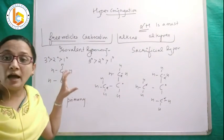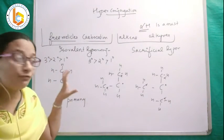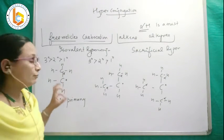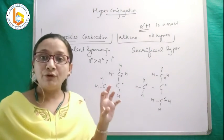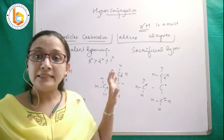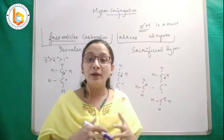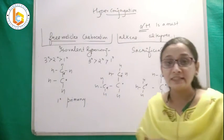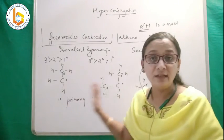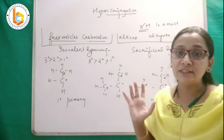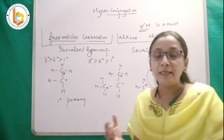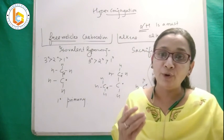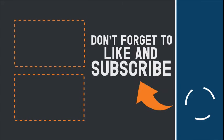If I want to make the hyperconjugation forms for primary, secondary, and tertiary species, how do I make them, and how do I understand which one is more stable? Keep watching and keep liking — I will be publishing more videos on hyperconjugation.